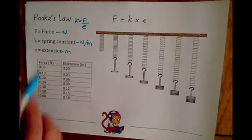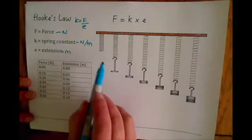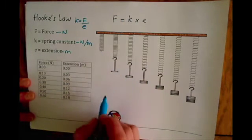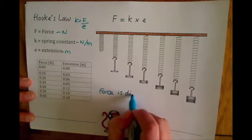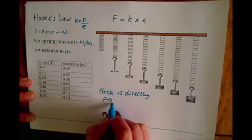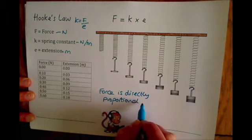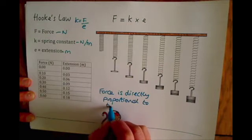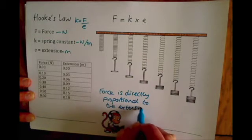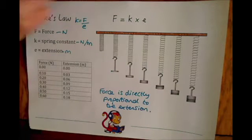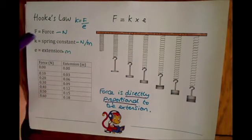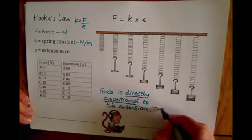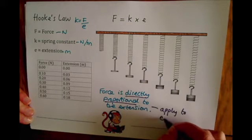So what does Hooke's law describe? Hooke's law is the idea that when you add force to a spring, the force that you add is directly proportional to the extension. We'll go through and explain what that means. The force is directly proportional to the extension, and this can apply to a spring but actually to any elastic object.